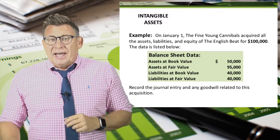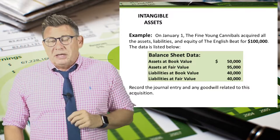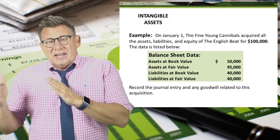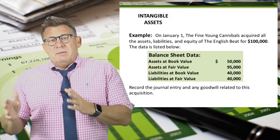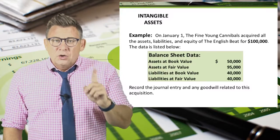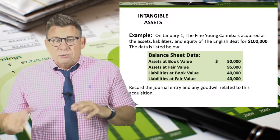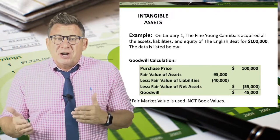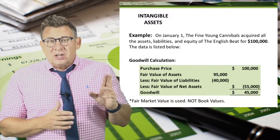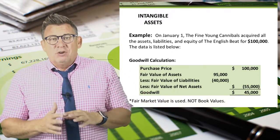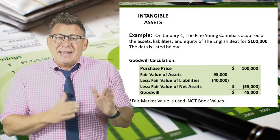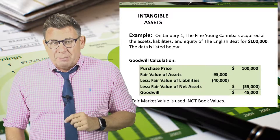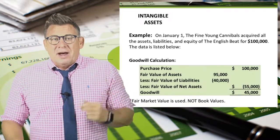On January 1, the Fine Young Cannibals acquired all the assets, liabilities, and equity of the English Beat for $100,000. The English Beat's fair value of assets is $95,000, and the fair value of liabilities is $40,000. We only use fair market values when calculating goodwill and recording the purchase of another company. Goodwill is the excess of the purchase price beyond the fair value of the net assets. The fair value of the assets minus the fair value of the liabilities equals the fair value of the net assets, and that amount is $55,000. Since Fine Young Cannibals paid $100,000 for the company, the excess must be goodwill in the amount of $45,000.